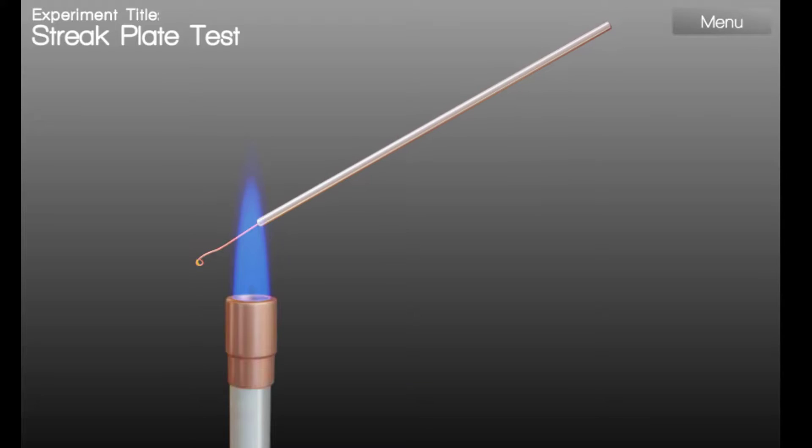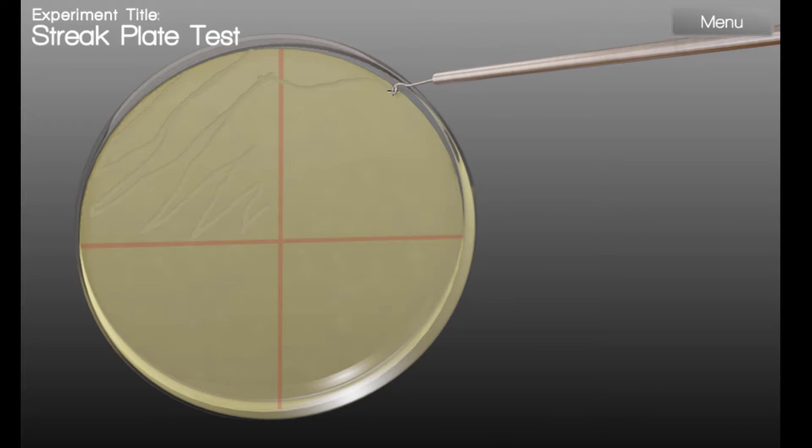Then, flame the loop and let it cool. The easiest way to make sure the flame has cooled enough is to gently touch it to the agar and make sure the agar does not melt. Now, turn the plate 90 degrees and lightly sweep the loop one or two times through the inoculated area. Then, streak into the next quadrant without overlapping previous streaks. This is going to cause a dilution.